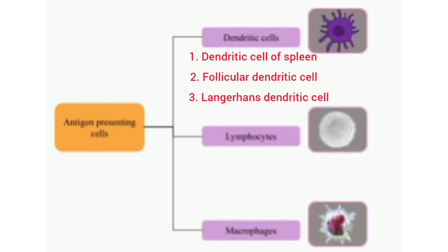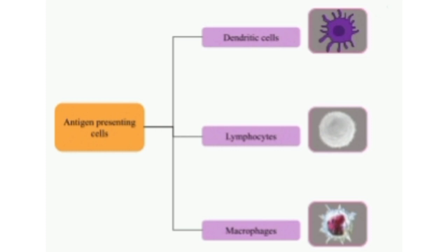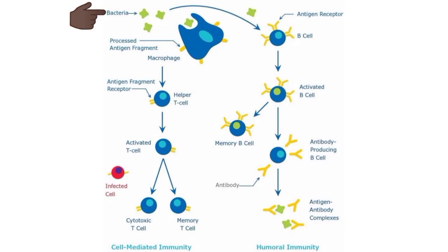B cells are the least efficient antigen-presenting cells and need to be activated by helper T cells. Invading foreign organisms are either engulfed by macrophages through phagocytosis or trapped by dendritic cells. The antigen from these organisms is digested into small peptide products. These antigenic peptide products move toward the surface of antigen-presenting cells and bind with the human leukocyte antigen. The B cells ingest foreign bodies by means of pinocytosis.